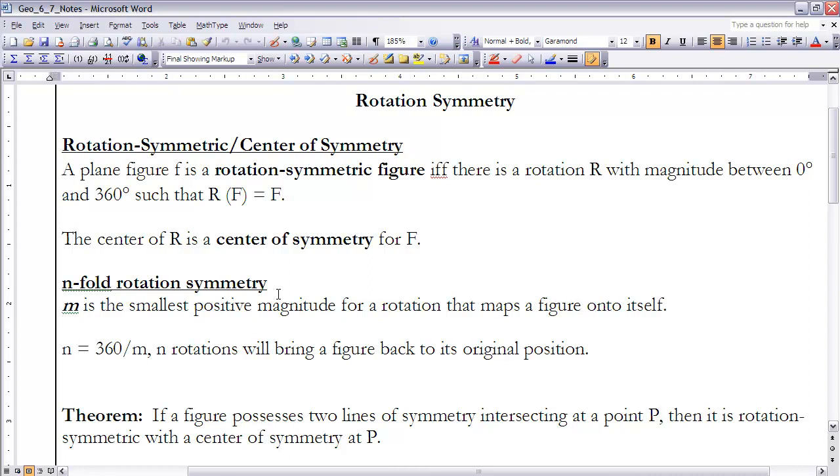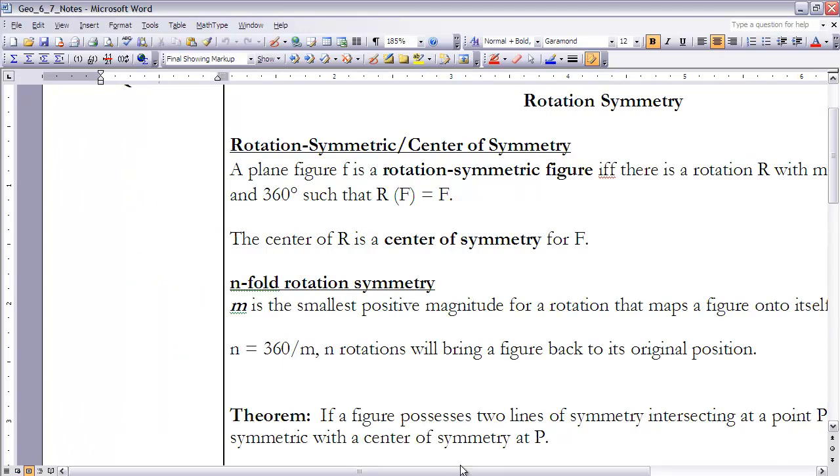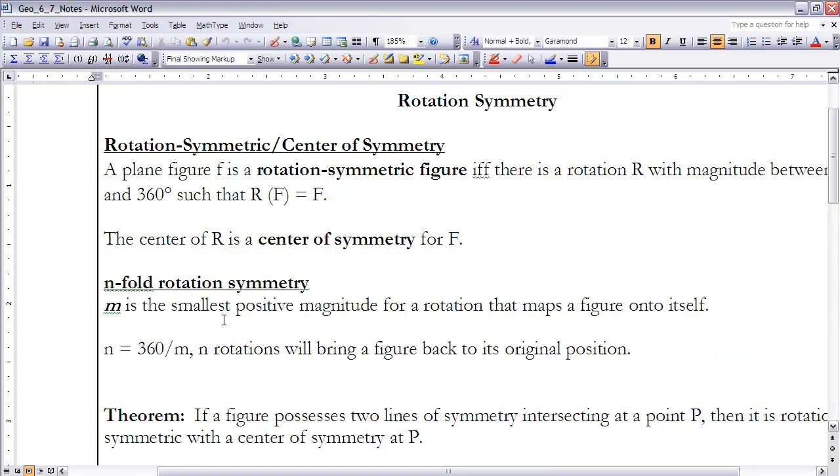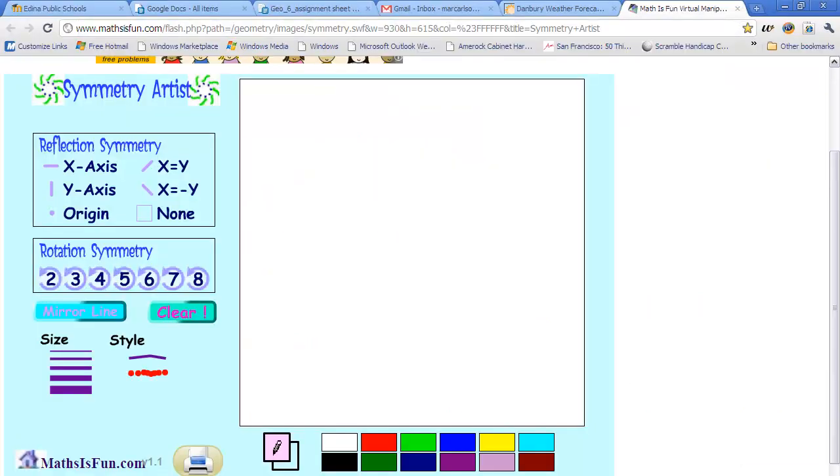We're going to say that m is the smallest magnitude for a rotation that maps a figure onto itself. In other words, what's the smallest turn I can do to a figure such that it will sit right back on top of itself? To get n, the number of fold rotation, we take 360 degrees (the measure going all the way around) and divide it by m, the magnitude of the smallest rotation. So n rotations will bring a figure back to its original position.